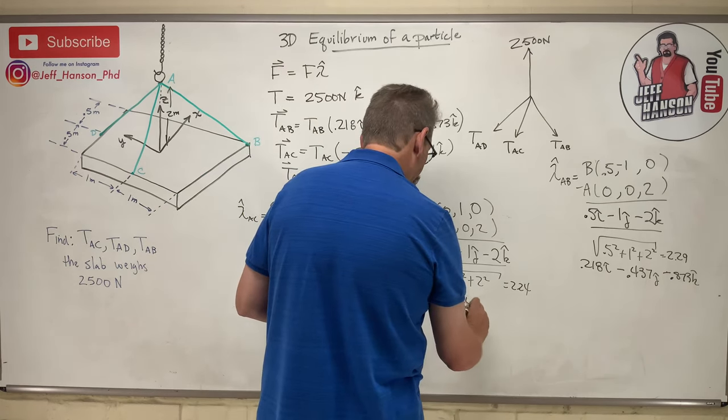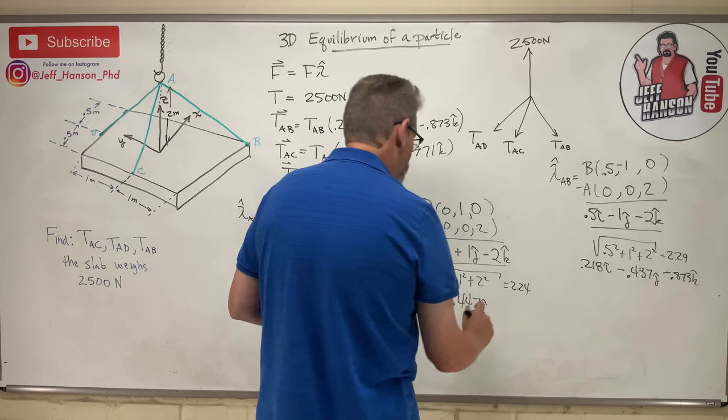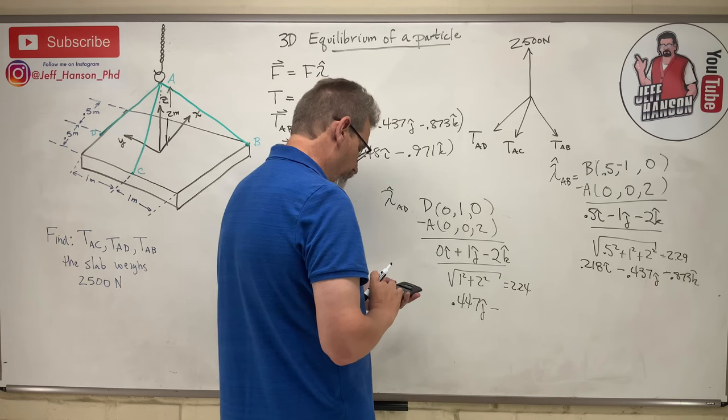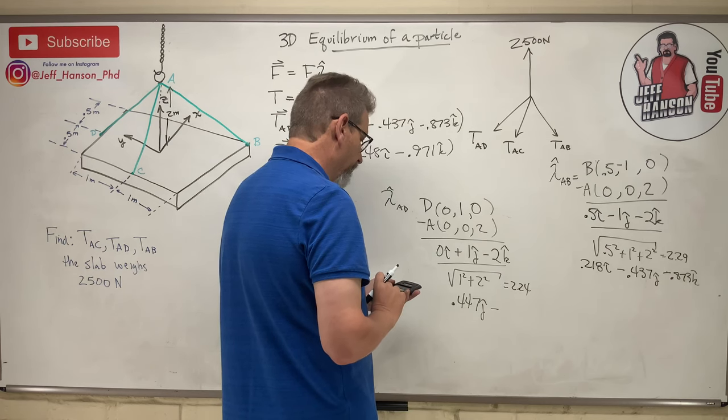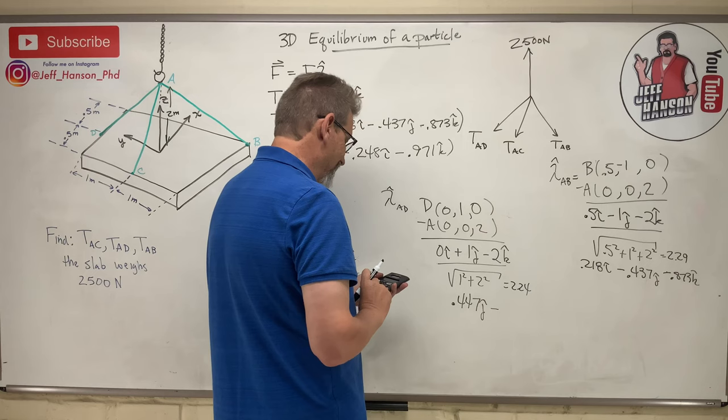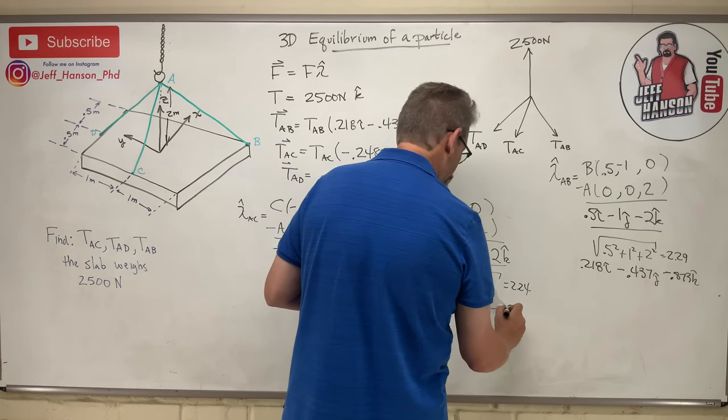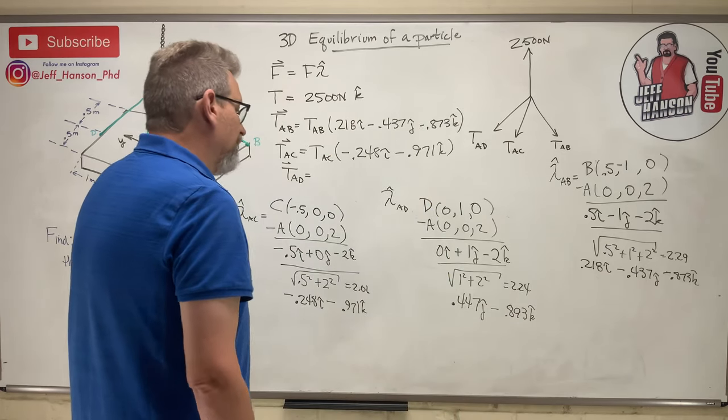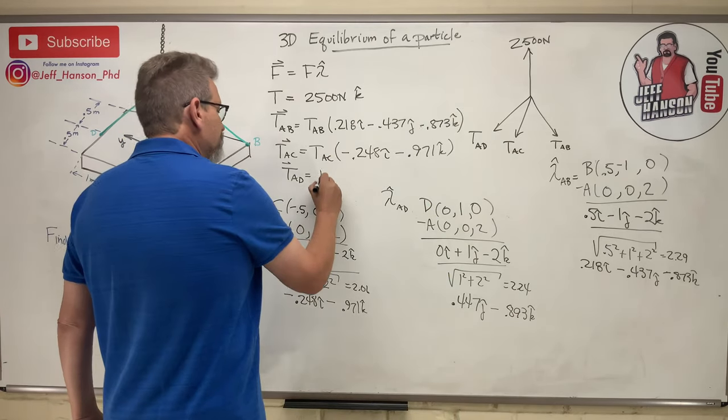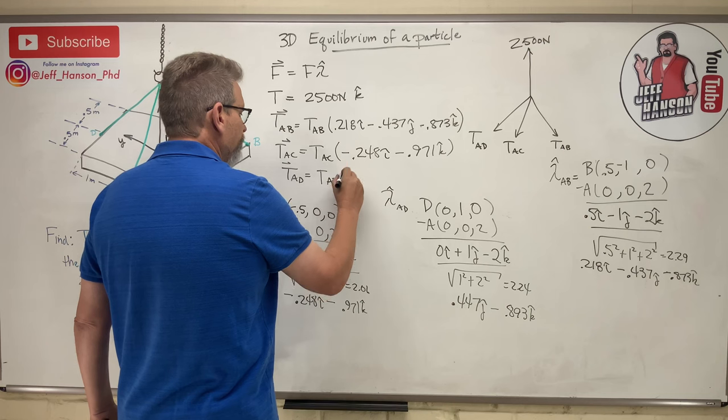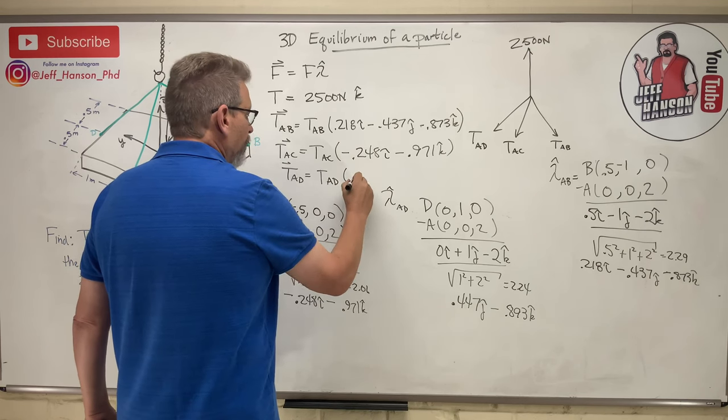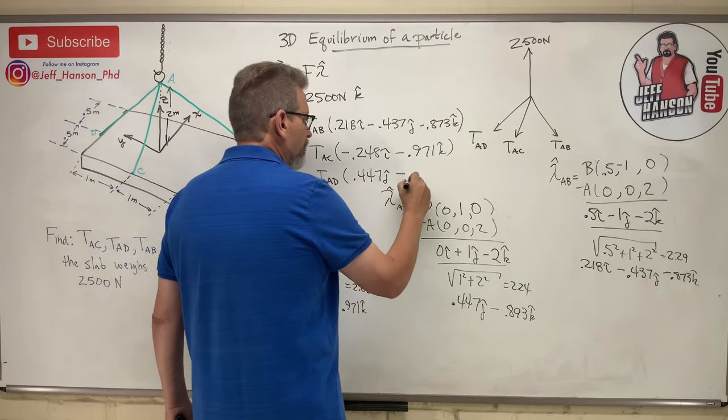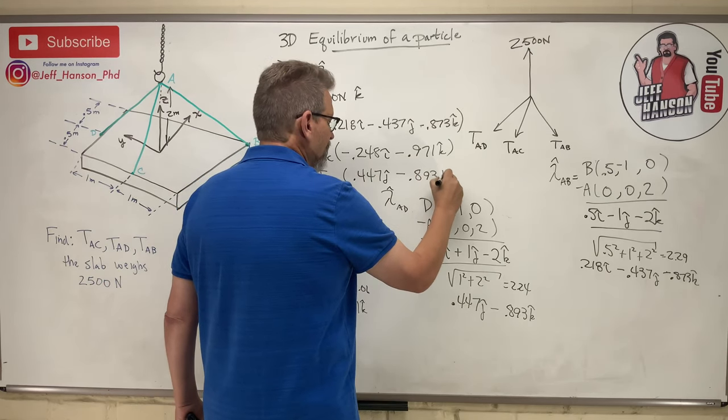And so that's 1 divided by, that is 0.447, and that's positive, and then minus 2 divided by 2.24, 0.893. And so there's my last vector, TAD. It's going to be 0.447 j hat minus 0.893 k hat.